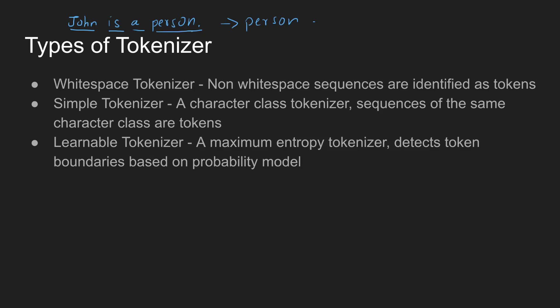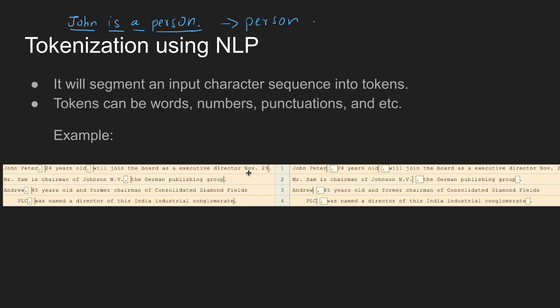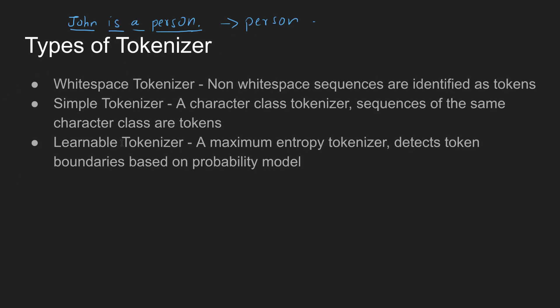The learnable tokenizer is called Maximum Entropy. It is based on previous learning — previous learning is used to create a probability model, based on how the data is used. In this example, a learnable tokenizer produces the same output. Both whitespace and simple tokenizers are helpful in natural language processing and other applications. This is the importance of tokenization — its rules and types.